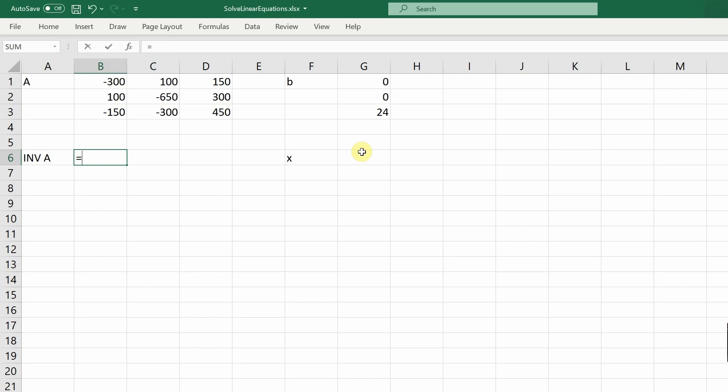Well, in order to get x, I need to figure out the inverse of this A matrix first. And in Excel, the matrix inverse function is just called minverse for matrix inverse. And then I need to give it the range of values that I want to invert. In this case, it's going to be B1 to D3. And it fills in the matrix for me automatically.